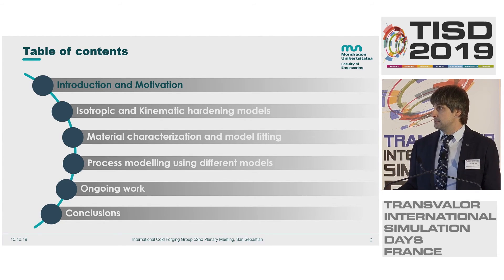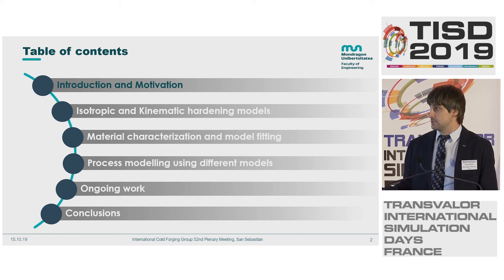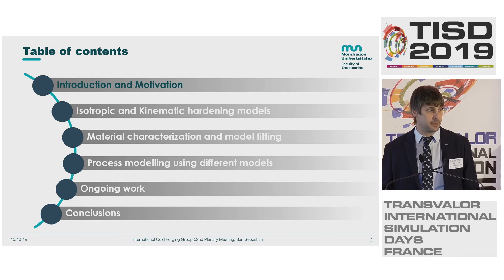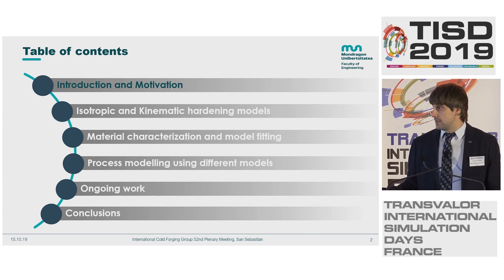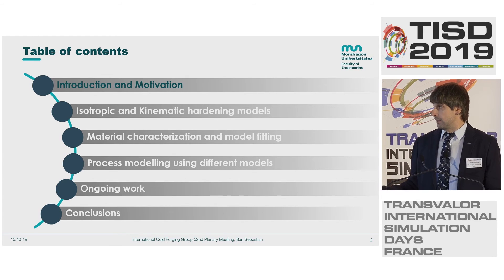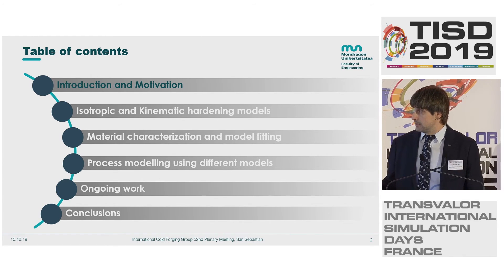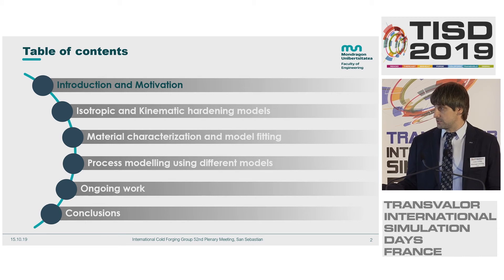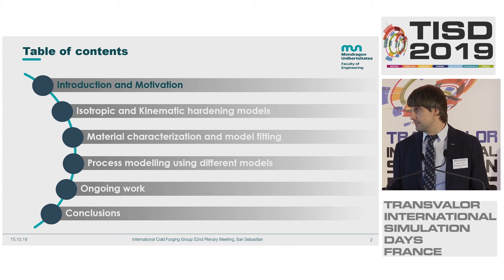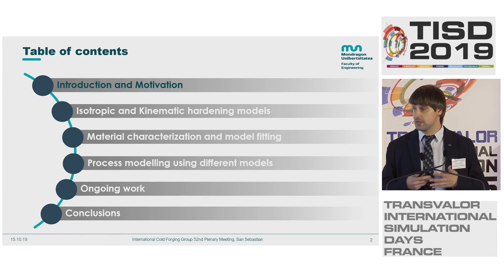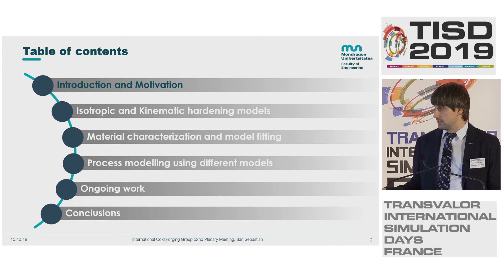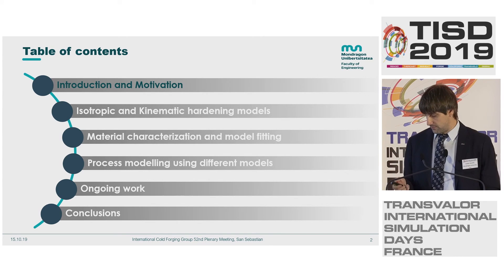Here is the table of contents: a small introduction and motivation, then I will explain what isotropic, kinematic, and mixed hardening models are. Then the material characterization for a specific cold forging material, model fitting, coding of the material together with Transvalor, process modeling using the isotropic classical model and the kinematic one, comparison of numerical results, and then some conclusions.